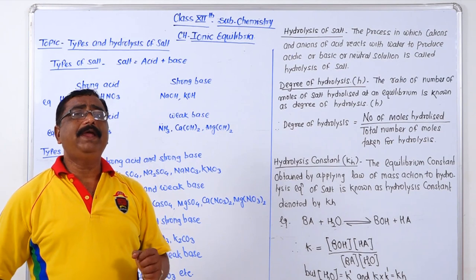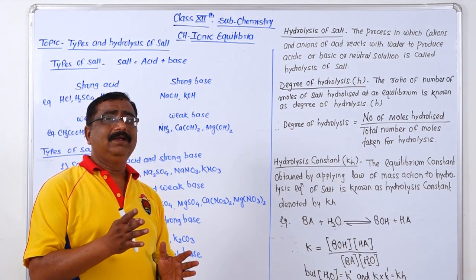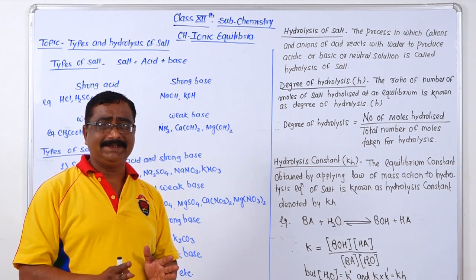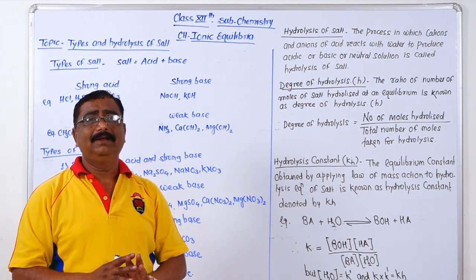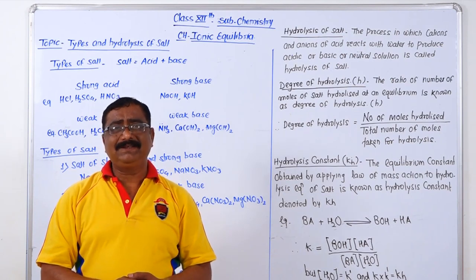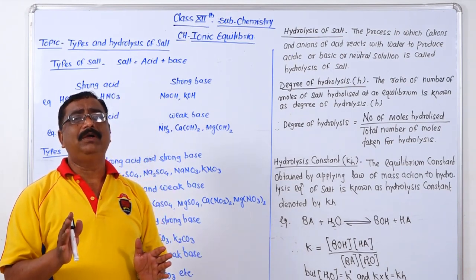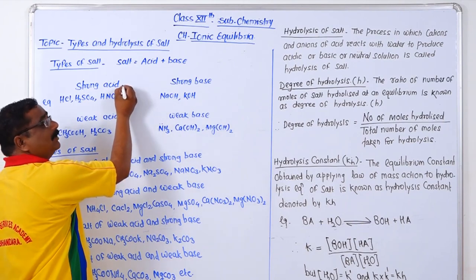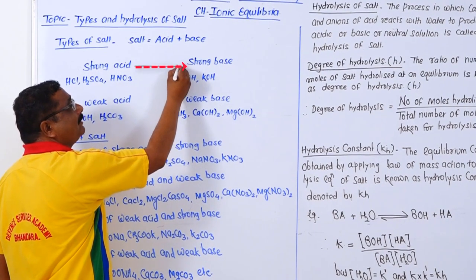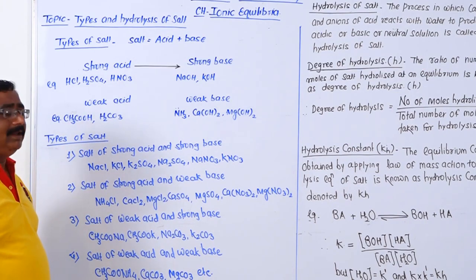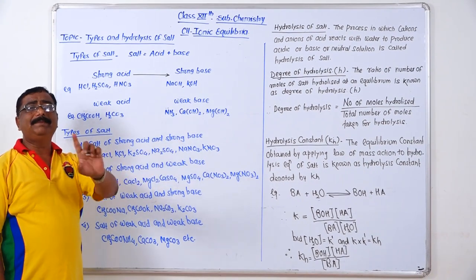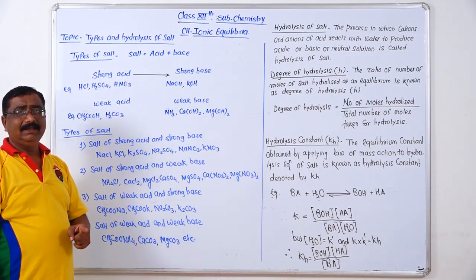If we combine strong acid and strong base — both are strong — then whatever salt is obtained is a salt of strong acid and strong base. So the first combination: when strong acid combines with strong base, a salt of strong acid and strong base is obtained. Examples of strong acids include HCl, H₂SO₄, and HNO₃.